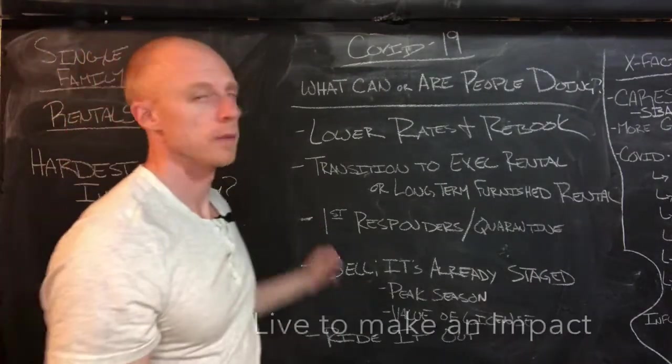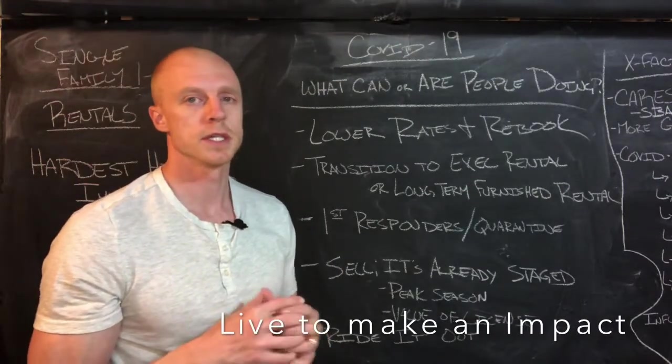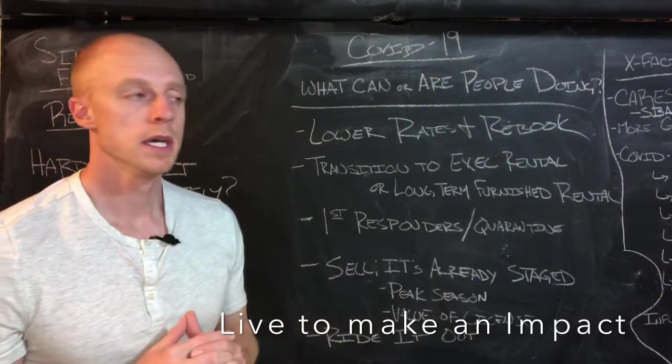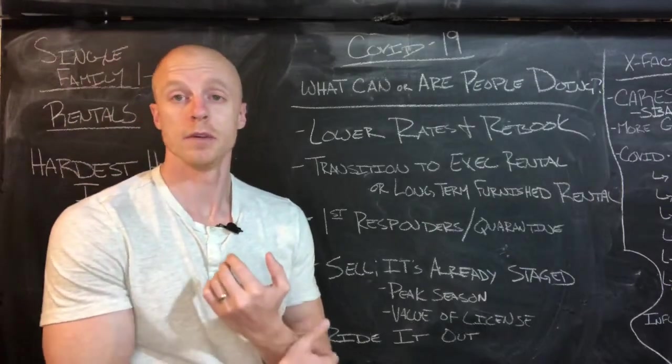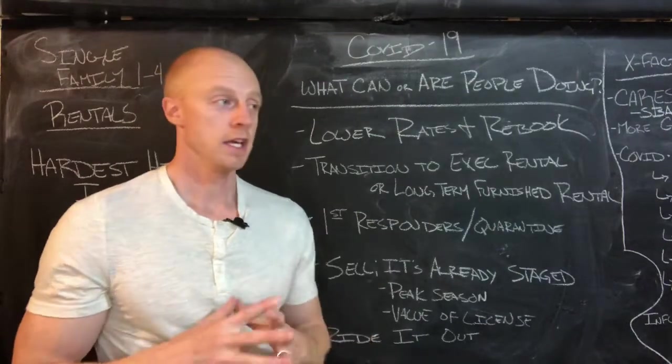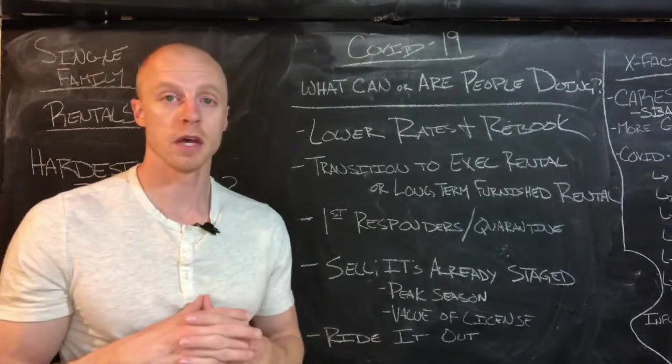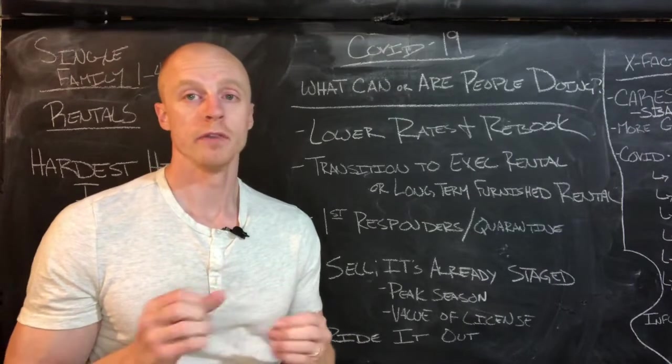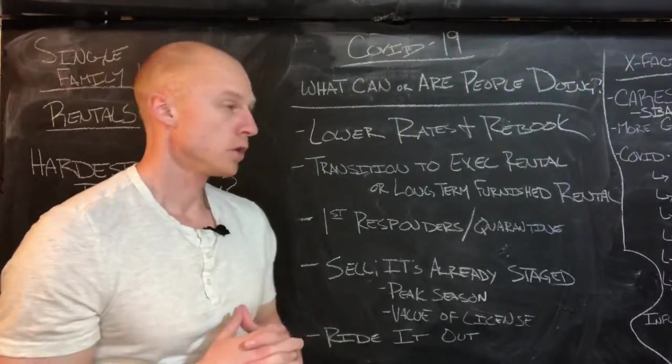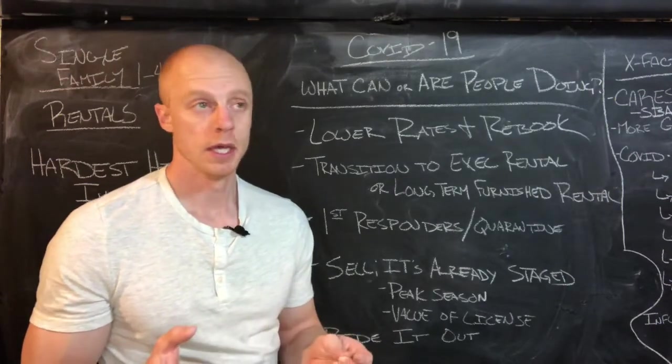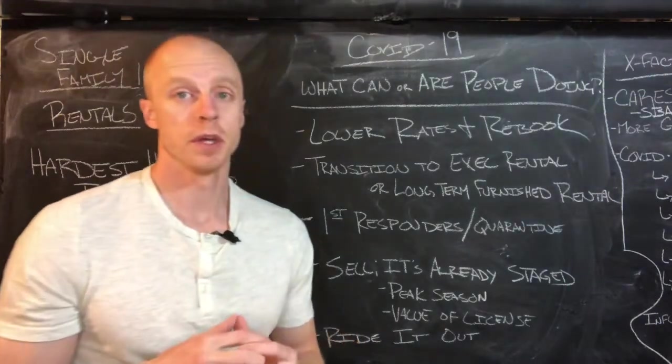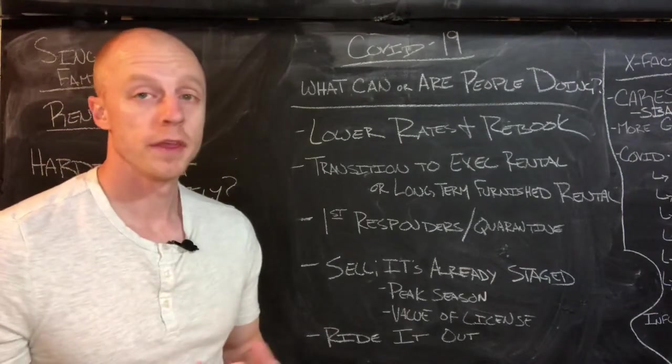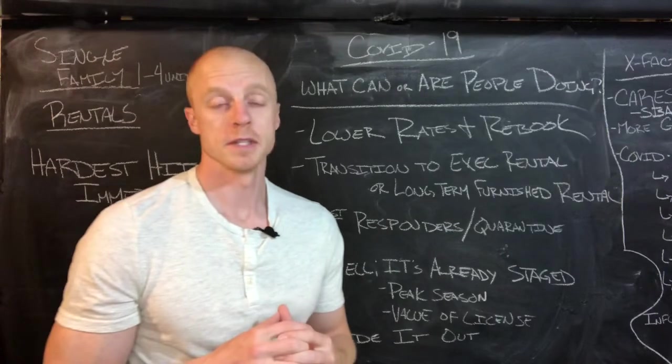Another fun thing that I think Airbnb is pitching, but also I've seen others offering, is a place for first responders or people who are quarantined. A lot of us don't have big enough houses for one person to stay at one side of the house and the other part of the family stay on the other side because they have either been in contact with or exposed to COVID-19. So these Airbnbs offer an option.